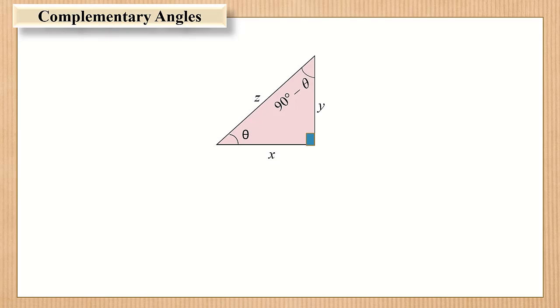Look at this right triangle. It follows from the above definitions that theta and 90 degrees minus theta are complementary angles in trigonometry for an acute angle theta.